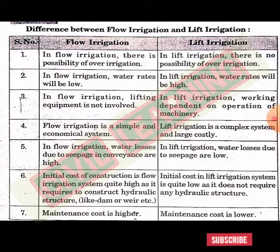In flow irrigation, water losses due to seepage in conveyance are high. When water flows horizontally, seepage losses and conveyance losses are of course higher. In case of lift irrigation, water losses due to seepage are low because when water movement is vertical, chances of seepage are very low.